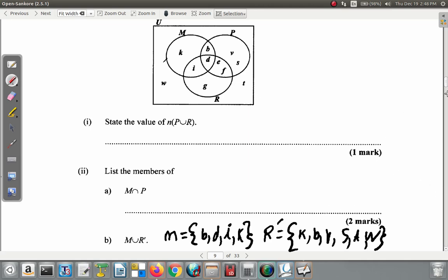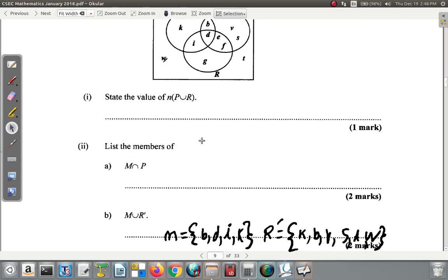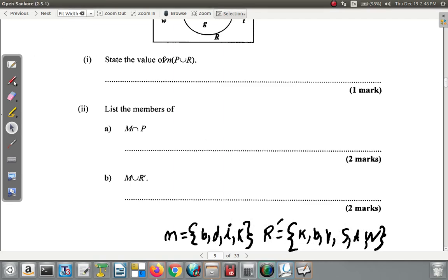Now M union R complement means you write down an item whether it's in one or both. I see b - b is in both. d is in M. Then i, then k. Over here I see k again, but you only need one k, not two.